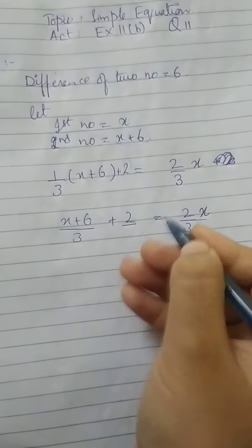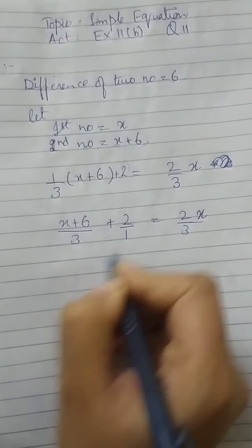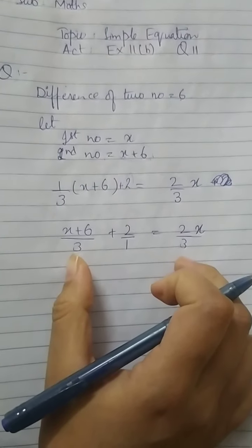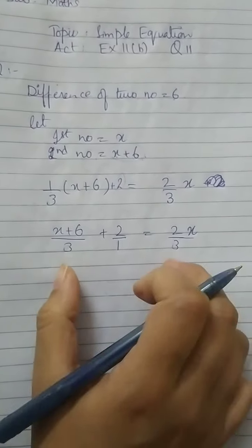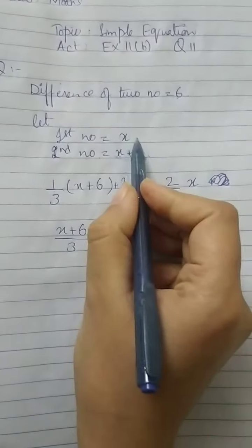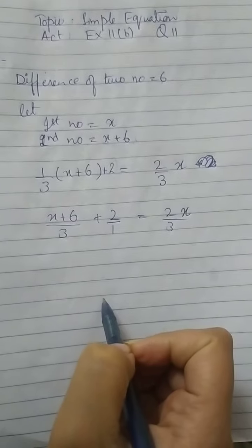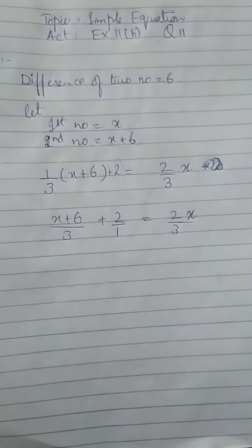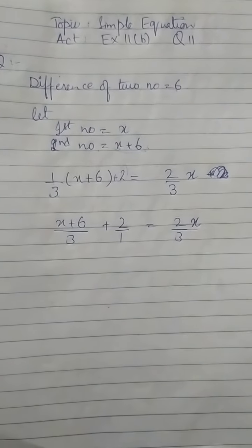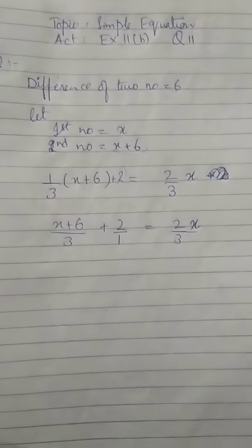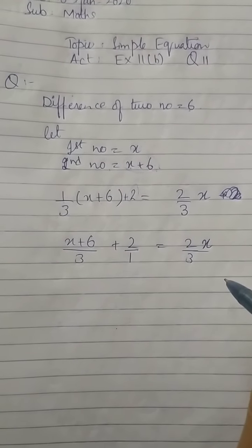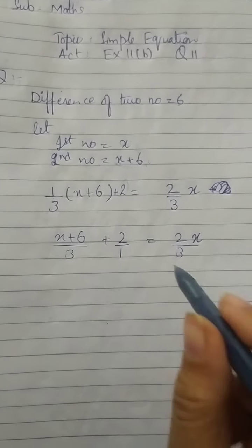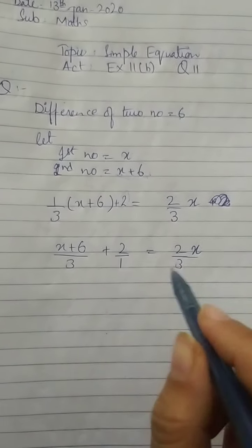Here the denominator is not given so I am writing 1. Try to solve this equation now by yourself and find the value of X. X ka jo bhi answer aayega, usme 6 plus kar denge, to hamare paas larger number aa jaayega. So try to solve question number 11 by yourself. Still if you find any problem, you can ask me.